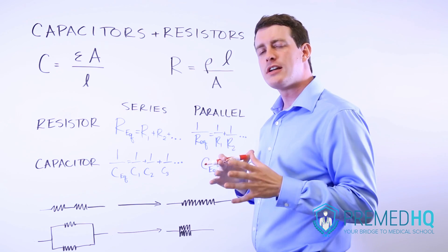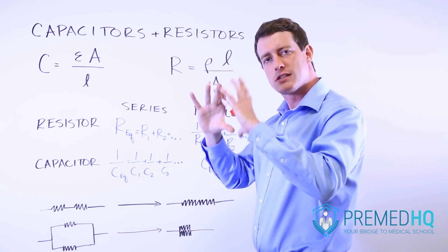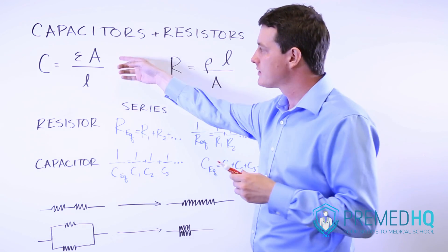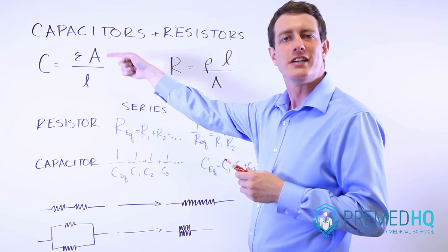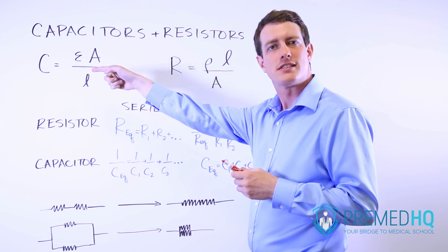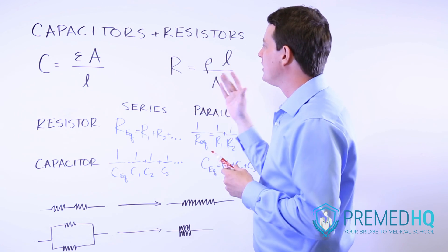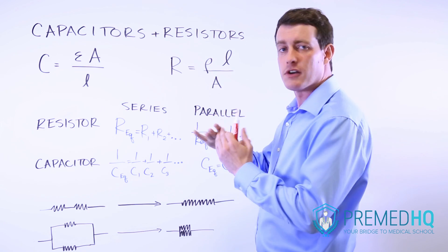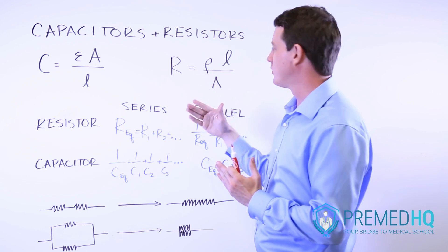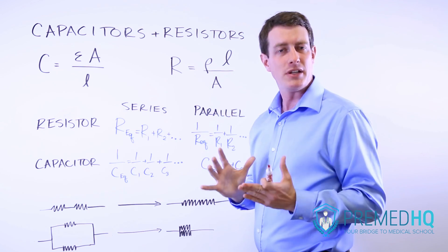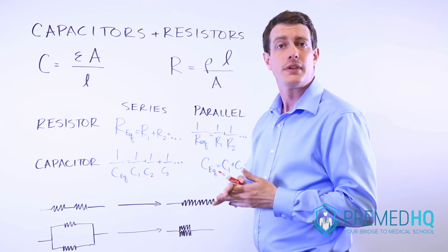Notice that if you increase the surface area of a capacitor, you're increasing its capacitance and its ability to store charge. But if you increase the surface area of a resistor, then you're actually reducing its ability to do that.